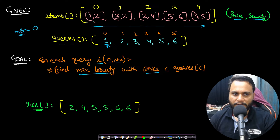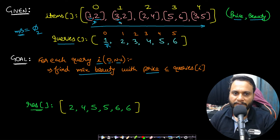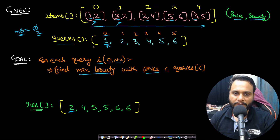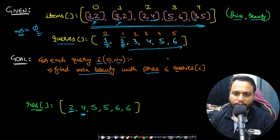I want to maximize the max beauty variable. If I check the first item, its price is less than or equal to what we have, so max beauty is compared with the current beauty 2 and updated to 2. For the next item, price 3 is greater than 1, so it cannot be taken. Similarly for items with prices 2, 5, and 3 — all greater than 1. So the maximum beauty we can get with price 1 is 2, and we store 2 as the answer for the 0th query. Similarly for the first query with price 2, iterating left to right gives a maximum beauty of 4.